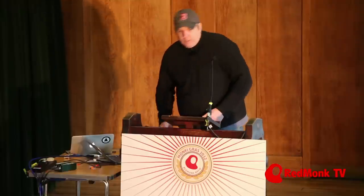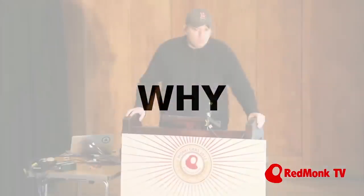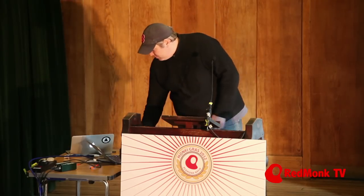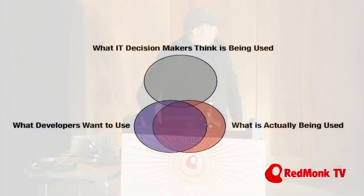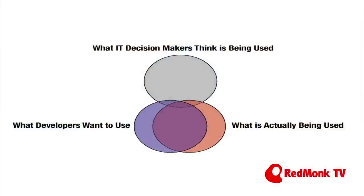I wanted to do basically three things: go through the why, the what, and then some examples of the data. The why, from our perspective, is really simple. The adoption of technologies is not reflected by what's purchased, and not reflected by what CIOs think is being used. They have very little to do with one another.